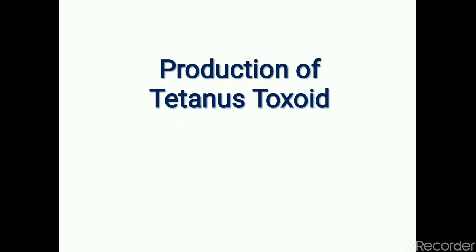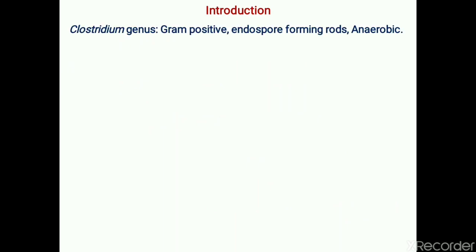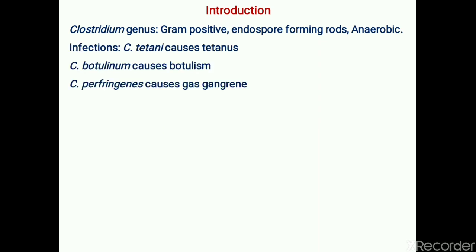Production of tetanus toxoid. The Clostridium genus is characterized as gram-positive, endospore-forming, rod-shaped bacteria that are anaerobic in nature. They are responsible for several infections in humans, such as Clostridium tetani causing tetanus, Clostridium botulinum causing botulism, and Clostridium perfringens causing gas gangrene.